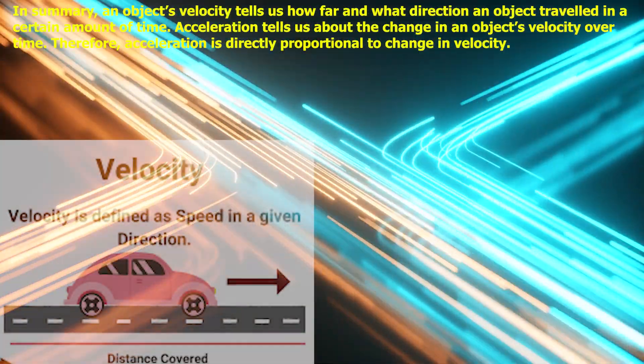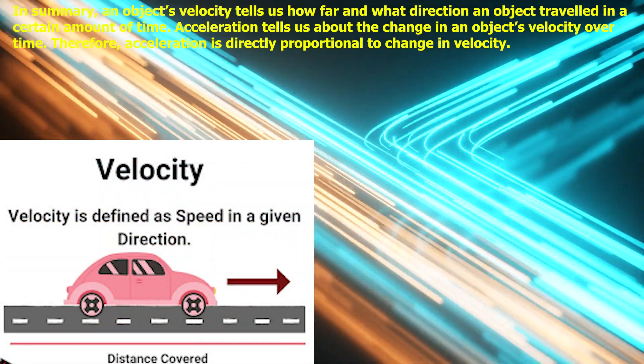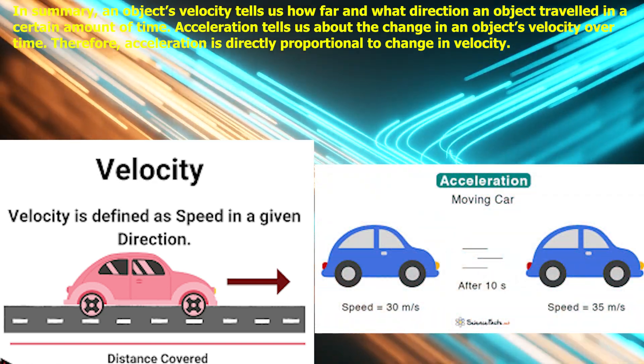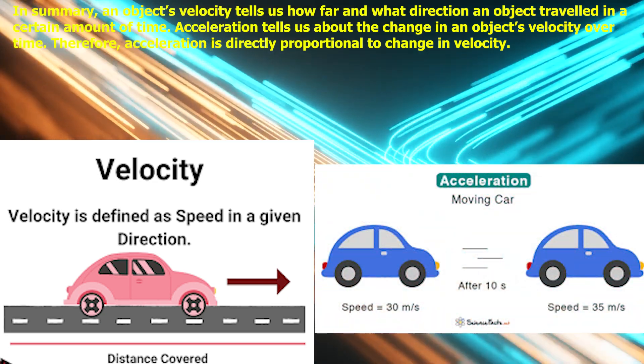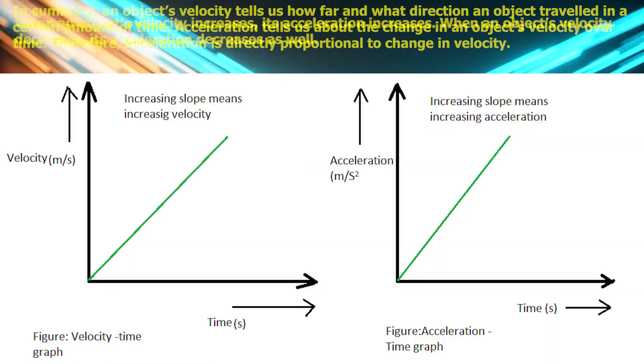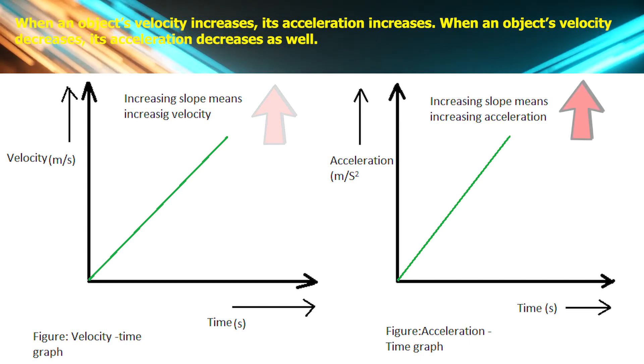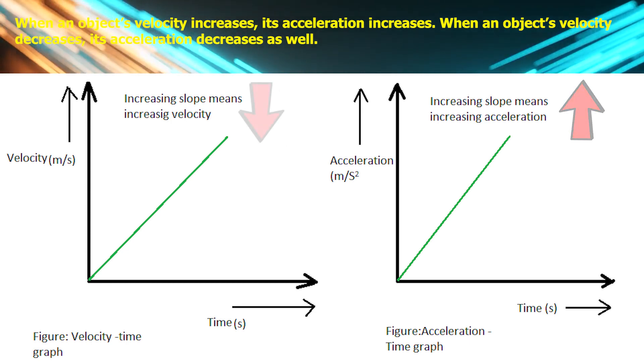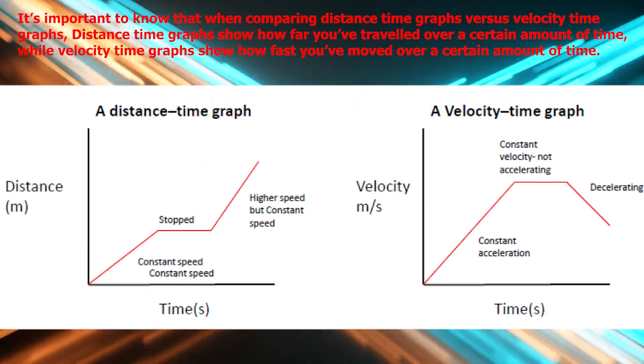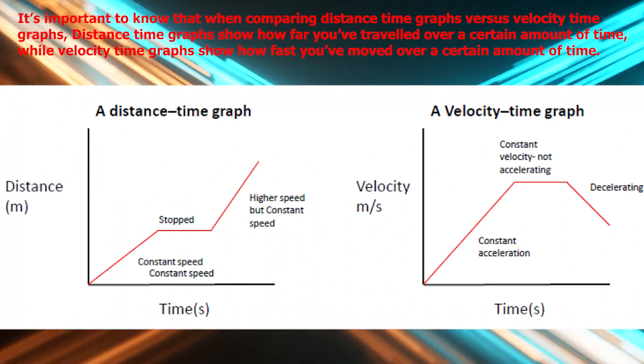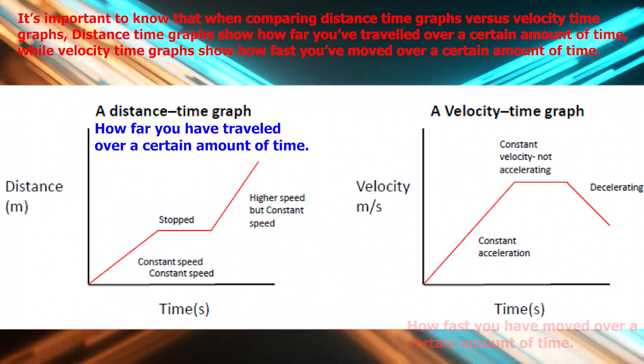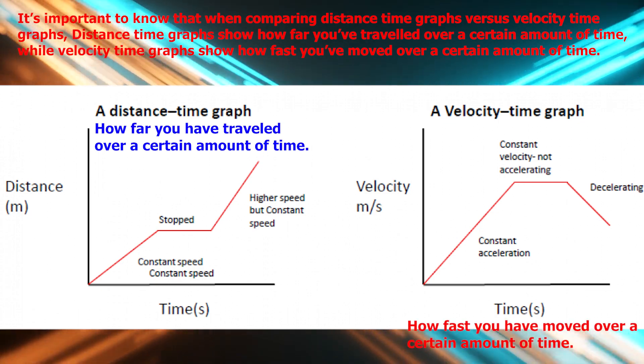In summary, an object's velocity tells us how far and what direction an object travels in a certain amount of time. Acceleration tells us about the change in an object's velocity over time. Therefore, acceleration is directly proportional to change in velocity. When an object's velocity increases, its acceleration increases. When an object's velocity decreases, its acceleration decreases as well. It's important to know that when comparing distance time graphs versus velocity time graphs, distance time graphs show how far you've traveled over a certain amount of time, while velocity time graphs show how fast you've moved over a certain amount of time.